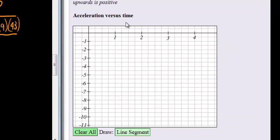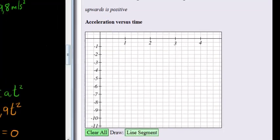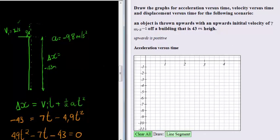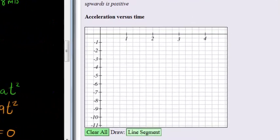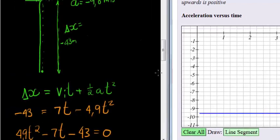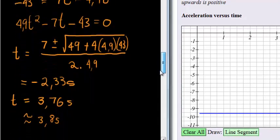Of course, acceleration versus time stays constant. It doesn't matter at what time we are measuring acceleration, it will be a constant negative 9.8. So in order to draw this graph, since this is a constant negative 9.8, it doesn't matter where we measure it on the graph, it would be at negative 9.8. So from here onwards.